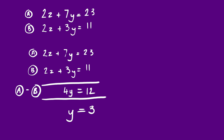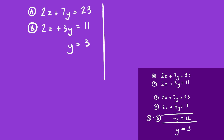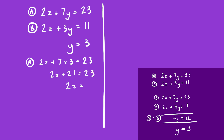The first step is always to solve the equation for one of the unknowns. Now that we know y = 3, we move to stage two: substituting that value back into either of the original equations. I'm going to substitute back into A, so 2z + 7 × 3 = 23, which gives 2z + 21 = 23. Therefore 2z = 2, and z = 1. We've now solved the simultaneous equation, finding values for y and z that work in both equations.